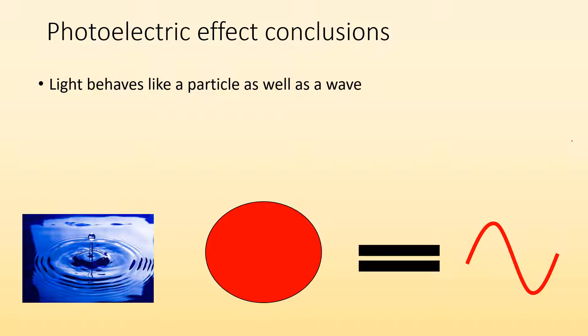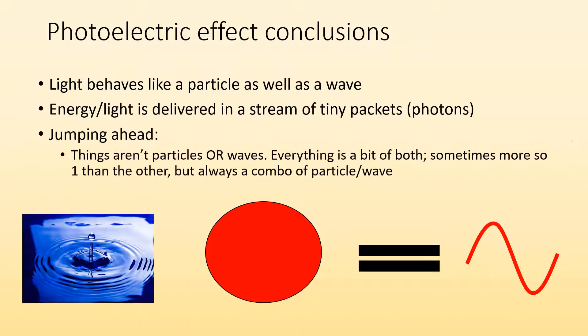We know that light behaves like a particle as well as a wave. If it was waves, you could have high intensity waves, and that'd be enough to kick off an electron. But it's not just a wave. It also has a particle-like behavior, a one-to-one. Energy and light is delivered in a stream of tiny packets that we're going to call photons. Things aren't particles or waves. That's really the problem we have in trying to understand this stuff. We usually think it's one way or the other. But we can't think of things as particles or waves. Everything is a little bit of both. Sometimes it's more one than the other, but it's always a combination of particle wave behavior.